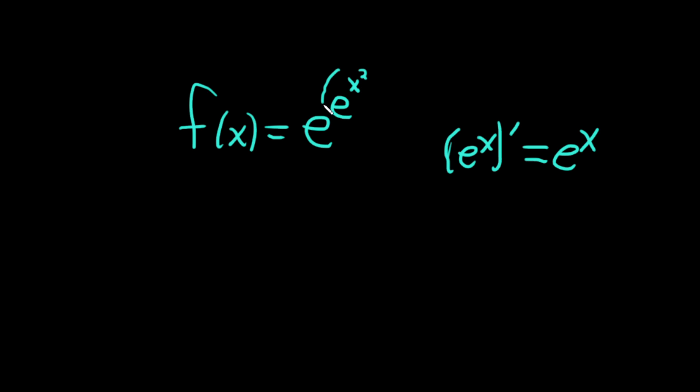So here it's e to this thing here. So when you take the derivative, you use the chain rule. You take the derivative of the outside function, which is e to the x, and you leave it evaluated at the inside.